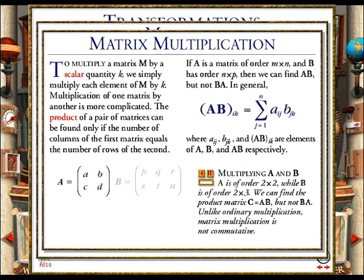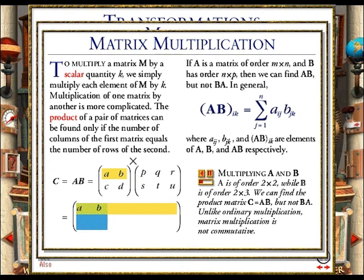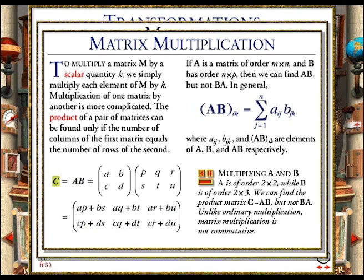We can multiply matrix A by matrix B in this order to obtain matrix C. To calculate the element in row 1, column 1 of C, multiply each element in row 1 of A by the corresponding element in column 1 of B, and add the products. Repeat this process for the remaining elements of C.